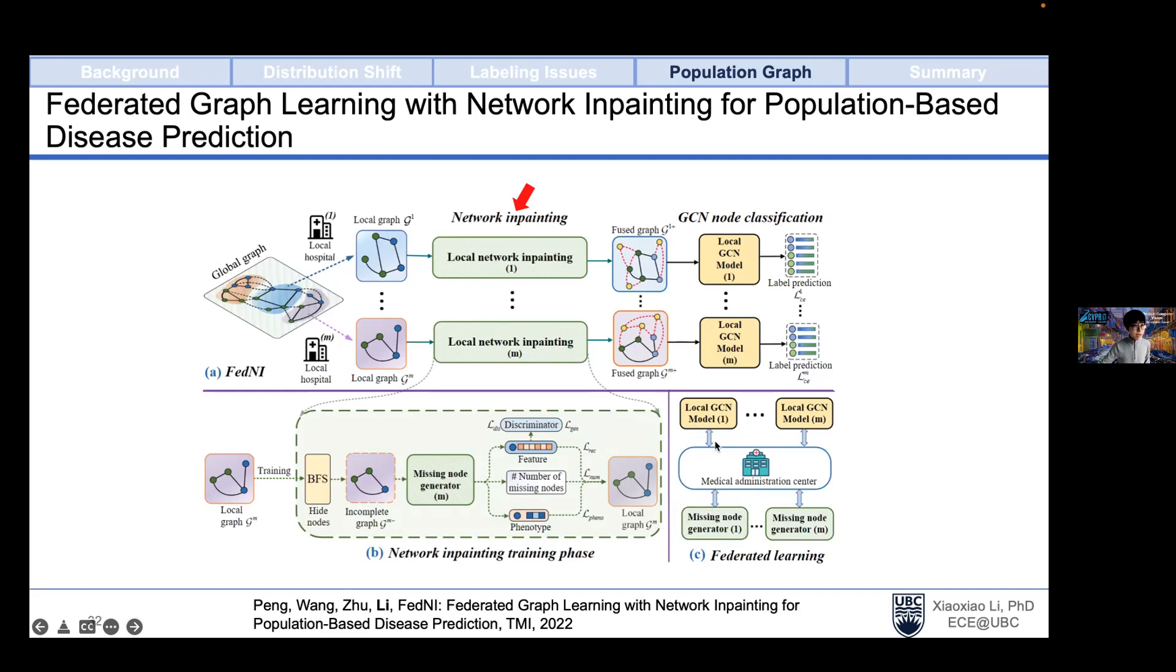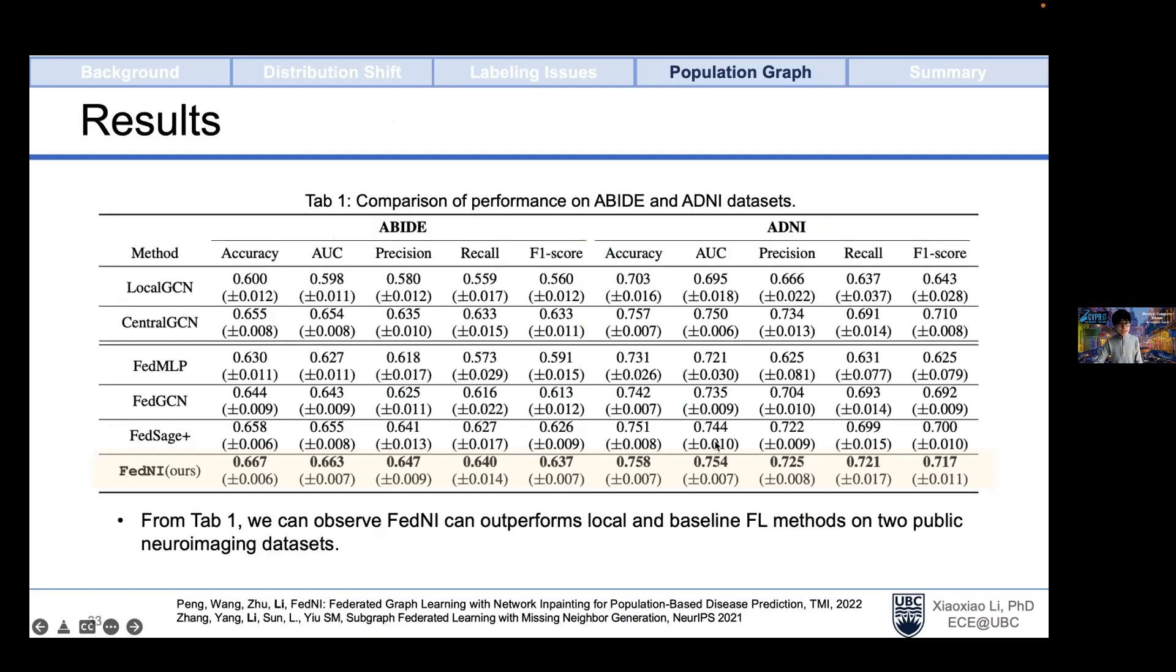For the sake of time, let's skip to the results. We tested our methods on two public neurodisorder datasets: ABIDE for autism classification and ADNI for Alzheimer's disease classification. We can observe that FEDNI can outperform the local training strategy and the federated learning methods on graphs. This FEDSAGE is our method proposed in NeurIPS 2021. Our method can leverage more data by the node generation, which yields better generalizability. This is aligned with the theoretical analysis in our NeurIPS work.